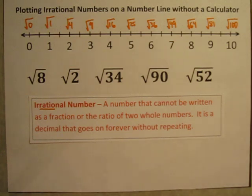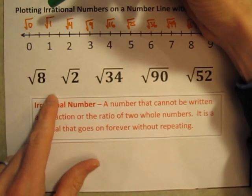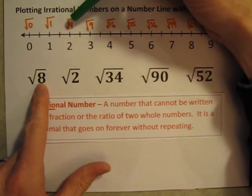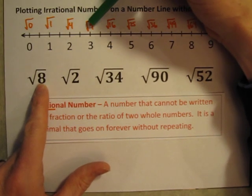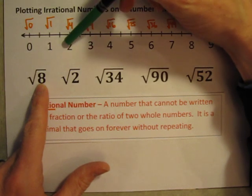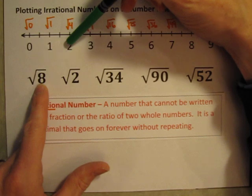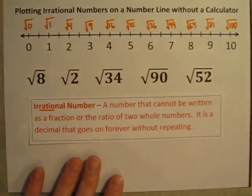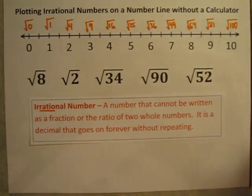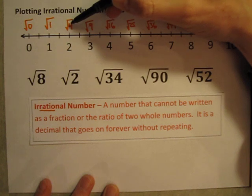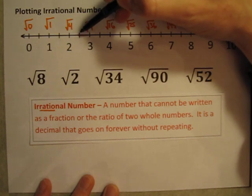So where does the square root of 8 fall? The square root of 8 is bigger than the square root of 4 but less than the square root of 9, so it's going to be between two and three. Because the square root of 4 is two and the square root of 9 is three. We can even be a little more specific: the square root of 8 is closer to the square root of 9 than it is to the square root of 4, so it's probably going to be greater than two and a half, a little less than three.